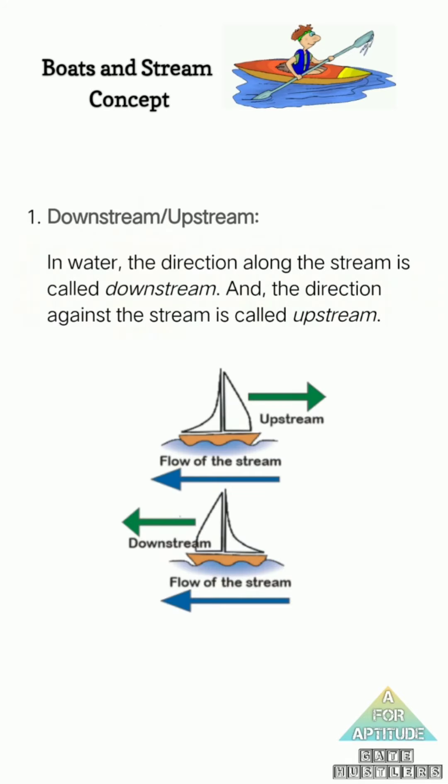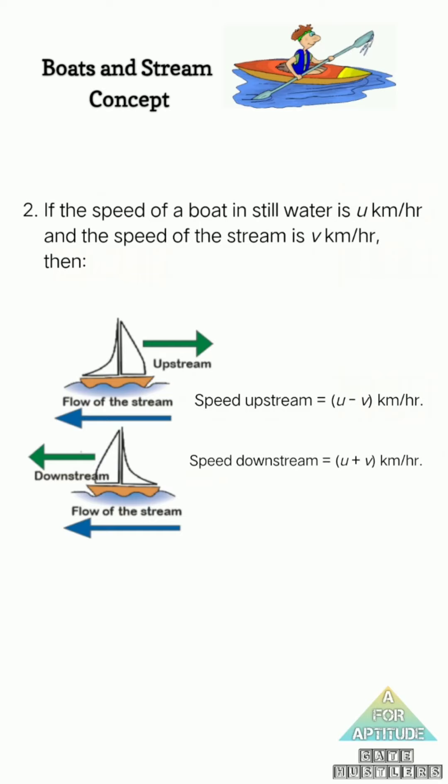Simple formula: boats and stream concept. We have 3 conditions. First condition: downstream and upstream. Downstream - boat and stream flow in the same direction. Upstream - you are going against the flow. Downstream, upstream. You are going downstream with the flow, upstream against the flow. We have downstream.